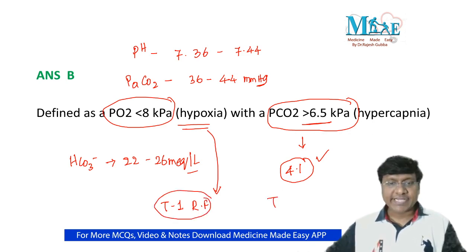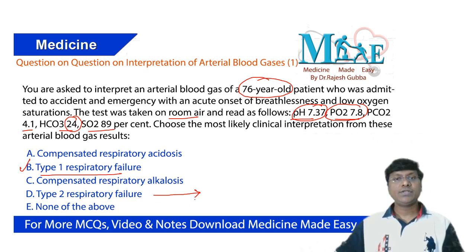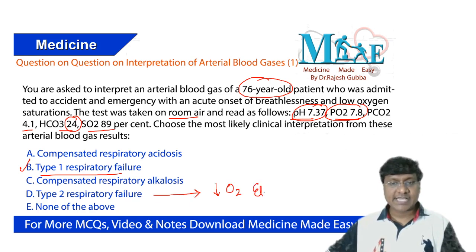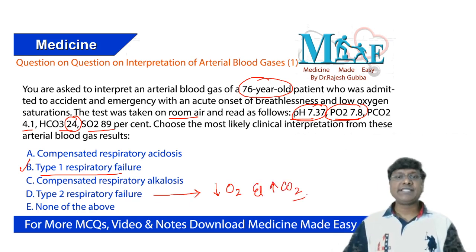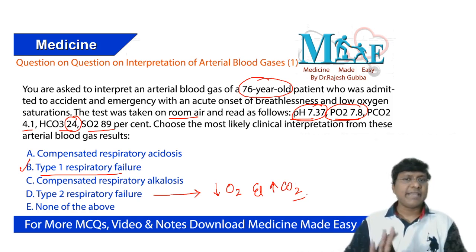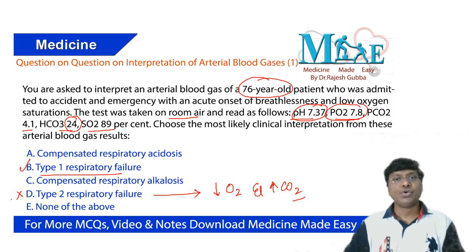In type 2 respiratory failure, the criteria are hypoxia and hypercapnia. Since hypercapnia is not present in this patient, type 2 respiratory failure is ruled out.